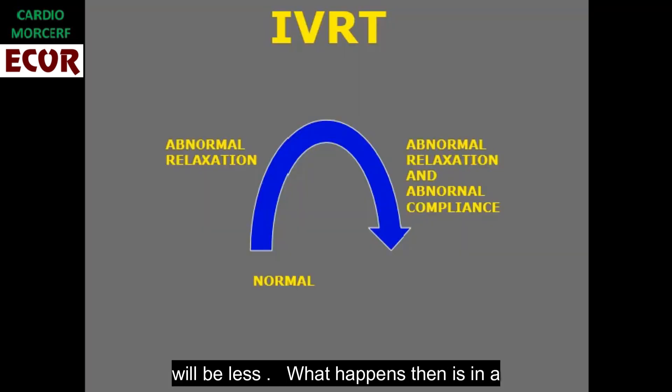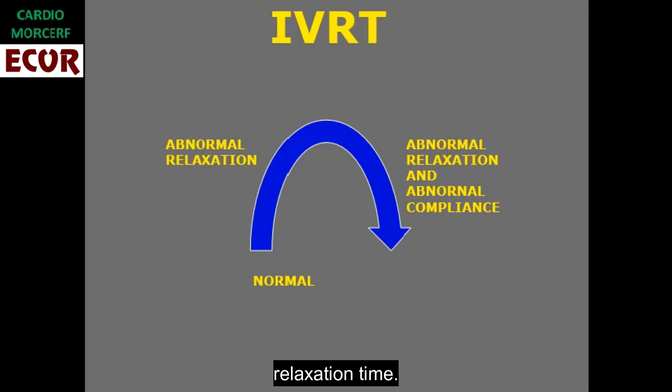What happens then is, in a patient who has a progressive worsening of its diastolic function, from normal to abnormal relaxation, and then to also abnormal compliance, the isovolumic relaxation time will show an inverted U-shape way. From a normal isovolumic relaxation time, this time will increase with delayed relaxation, and then will decrease as the situation gets worse.